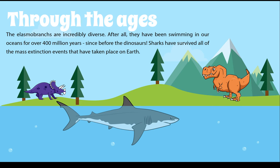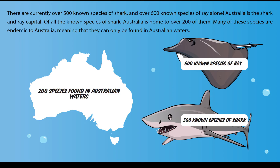Elasmobranchs are incredibly diverse. They have been swimming in our oceans for over 400 million years — since before the dinosaurs — and some shark fossils predate trees. Sharks have survived all the mass extinction events that have taken place on Earth. There are currently over 500 known species of shark and over 600 known species of ray alone, and Australia is the shark and ray capital of the world, home to over 200 species — many of which are endemic to Australian waters.